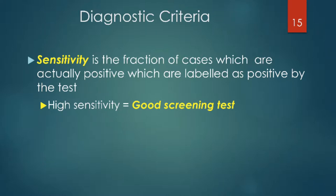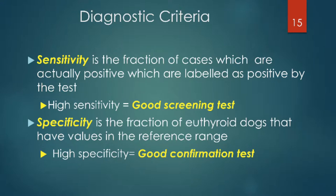The other criterion we often use is specificity, which is the fraction of euthyroid animals that have a value in the reference range. A good confirmation test should have high specificity.